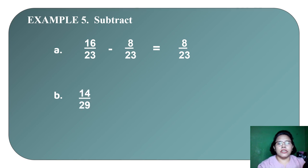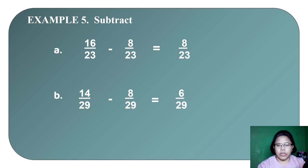Next: 14 twenty-ninths minus 8 twenty-ninths. 14 minus 8 equals 6, so the answer is 6 twenty-ninths. That is our final answer.